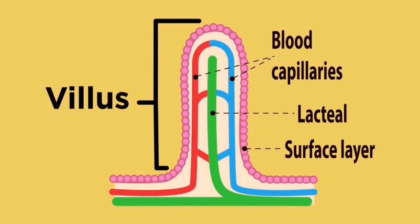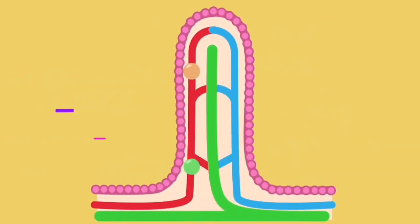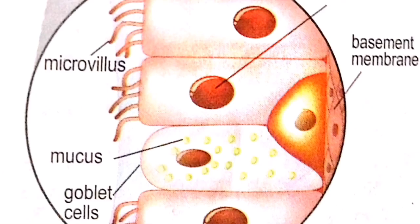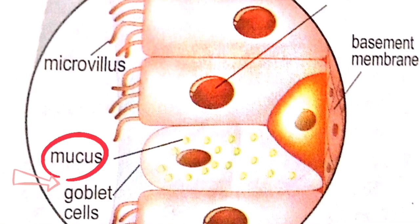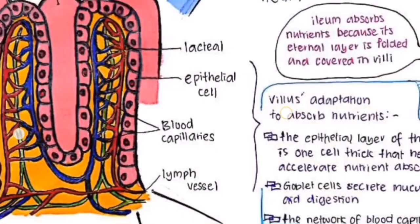Next, the surface layer of the villus, also known as the epithelial layer, is only one cell thick, and hence accelerates the level of nutrient absorption. The last adaptation is the presence of goblet cells, which secrete mucus that functions as an aid in digestion. That's the end of the section on villi.